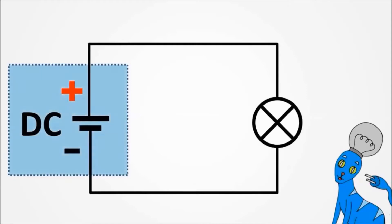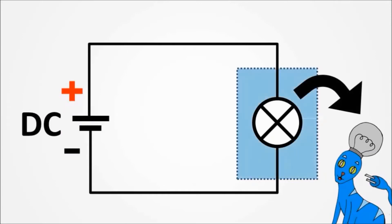The bigger bar in the DC charge symbol is its positive pole, and the smaller one is the negative one. And this is the symbol for a light bulb, just like this one on my head.